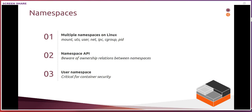Namespaces — this is what most people think of when they think containers on Linux. Namespaces are a way to get around some of the inflexibilities of the kernel, giving you a lot of flexibility not just for containers but for many different things. We have seven namespaces, and since the last couple of kernel releases, we now have eight namespaces: mount, UTS, user, net, IPC, cgroup, PID, and finally the time namespace.